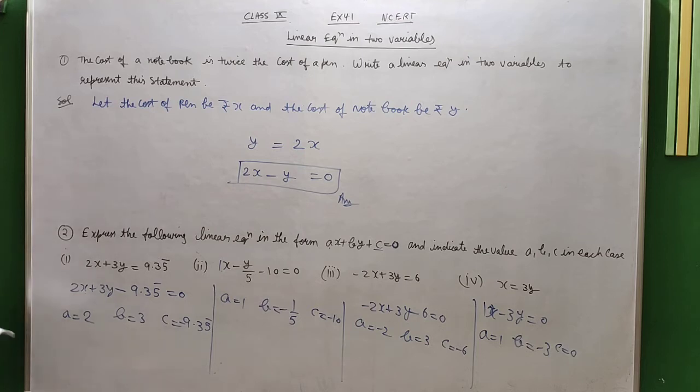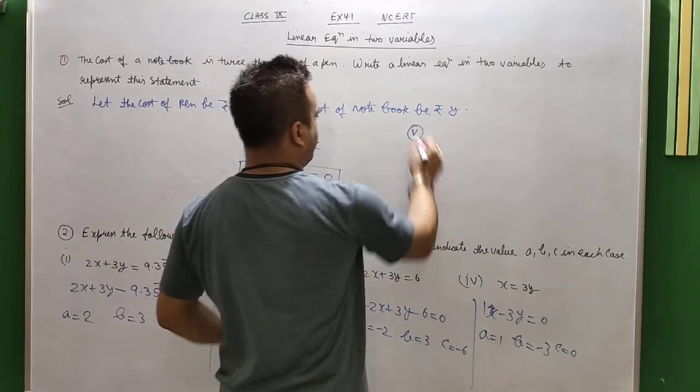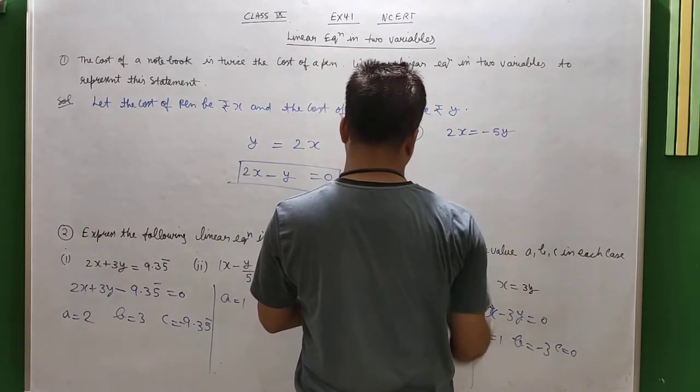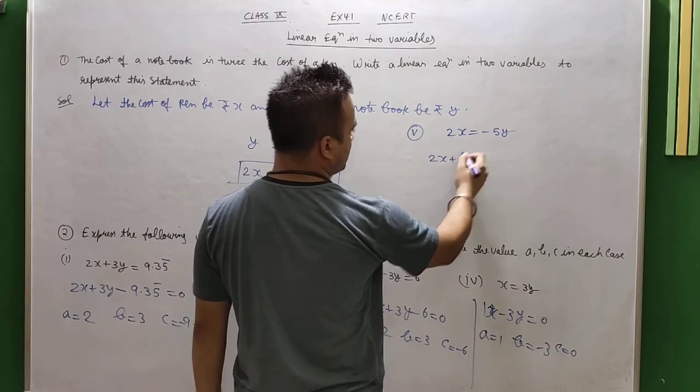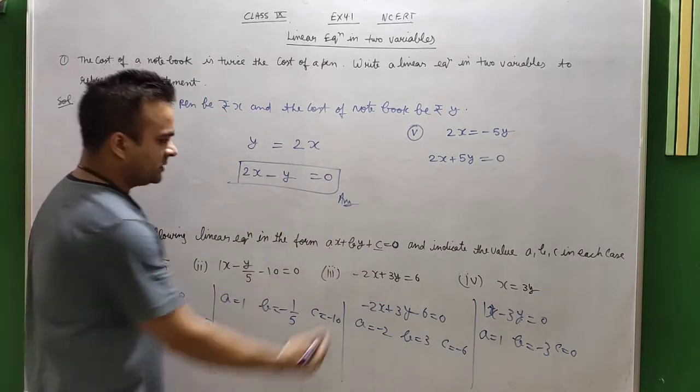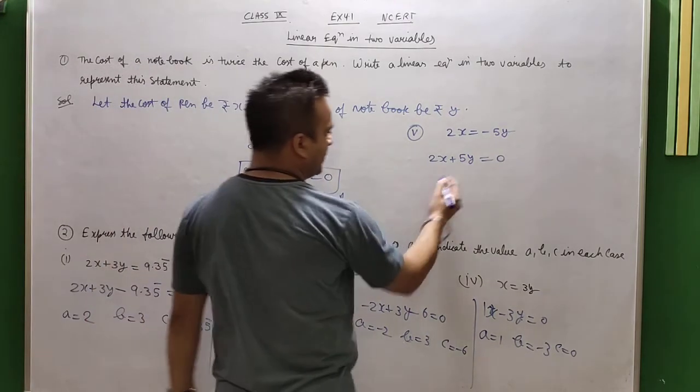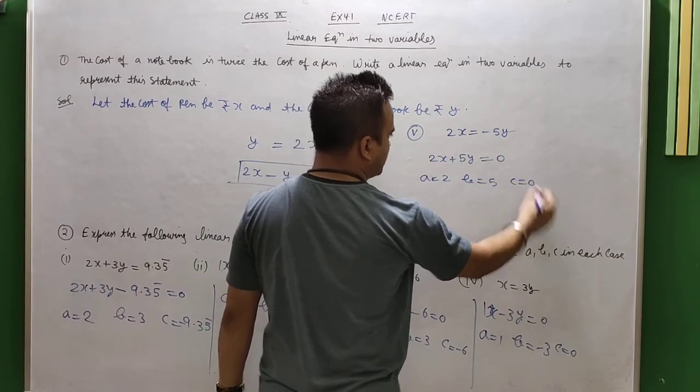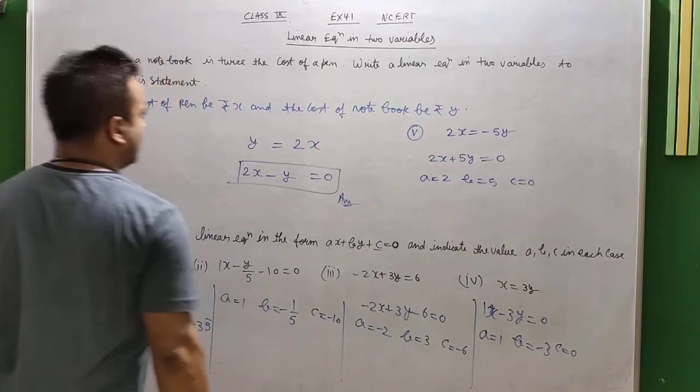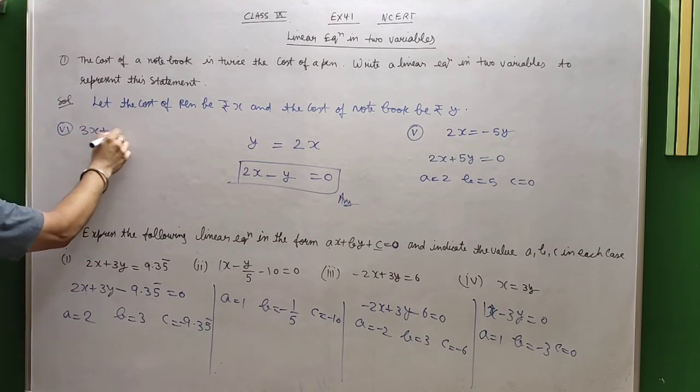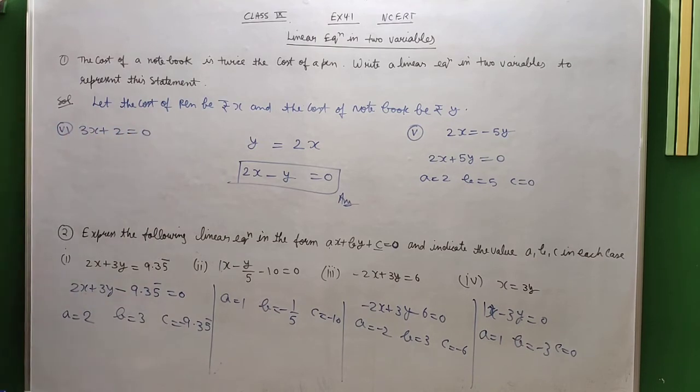Now if I talk about the 5th part, 2x equals minus y. If we write 2x plus y equals 0, then again c part is 0. So a is 2, b is 1, and c is 0. Correct? Now if I talk about the next part, y equals 2, then x is missing.